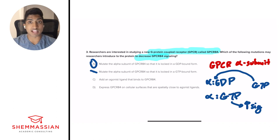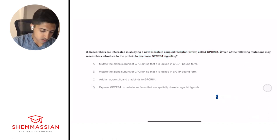Add an agonist ligand that binds to GPCR 84. Well, if we have an agonist ligand, agonist means we're going to have increased expression. Agonist and antagonist would decrease expression. So we're going to eliminate C. Express GPCR 84 on cellular surfaces that are spatially close to agonist ligands. If we put them close to agonist ligands, we'd expect there to be increased intracellular signaling. So we're going to cross that out and we're left with A, our first answer choice, and we've done it. Three for three. Great work.